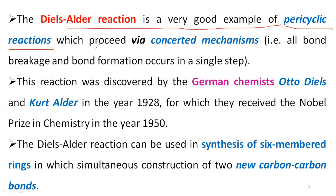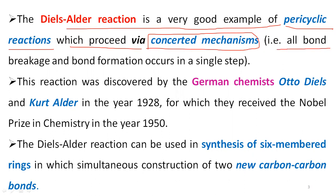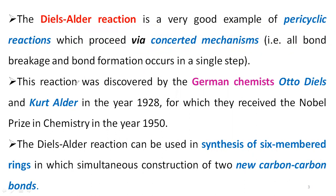The Diels-Alder reaction is also a very good example of a pericyclic reaction, and it proceeds via a concerted mechanism. Concerted mechanism means the bond breaking and bond formation occur in a single step. This reaction was introduced by the German chemists Otto Diels and Kurt Alder in the year 1928, and they won the Nobel Prize in Chemistry in 1950.